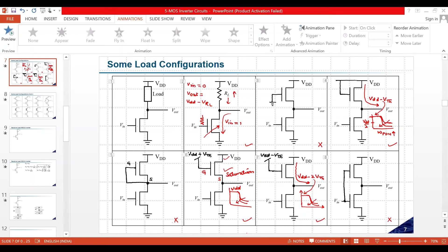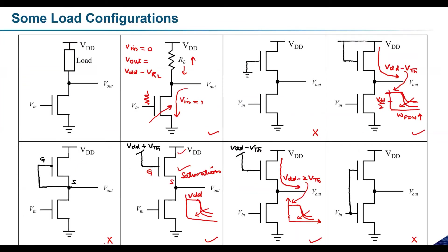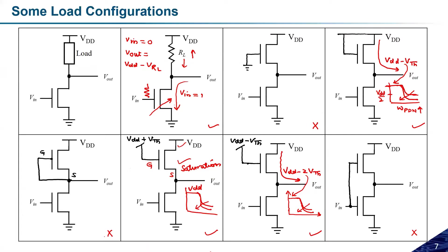Good morning everyone. In the previous class we were discussing about different configurations of load, and we considered various possible combinations if we have the nMOS transistor in place of load. We checked what happens if we connected the gate terminal of the nMOS transistor to ground, to VDD, to the output node, or to some higher or lower voltage, and we tried to check how these circuits will behave.